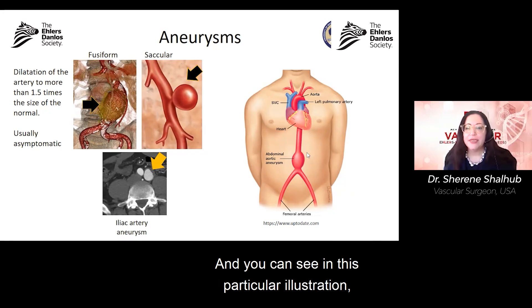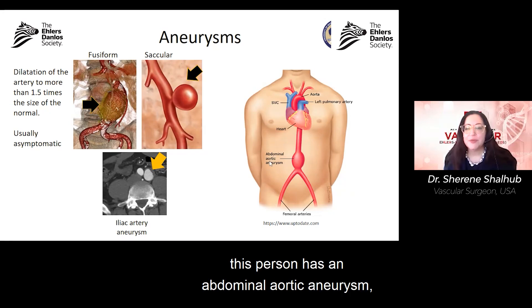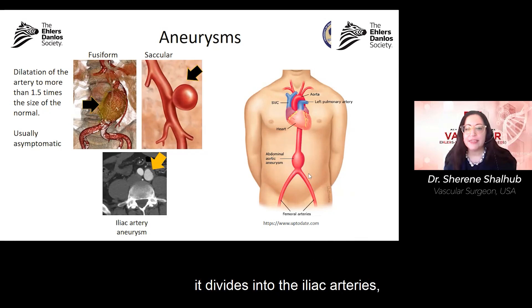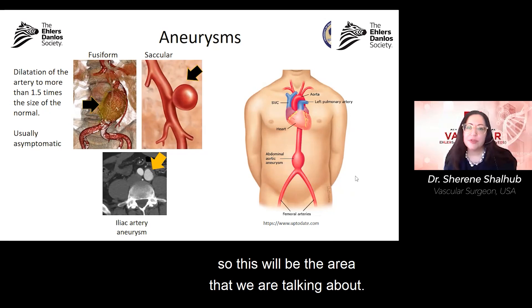In this particular illustration, you can see this person has an abdominal aortic aneurysm. Beyond the bifurcation at the umbilical level, the aorta divides into the iliac arteries. So this will be the area that we are talking about.